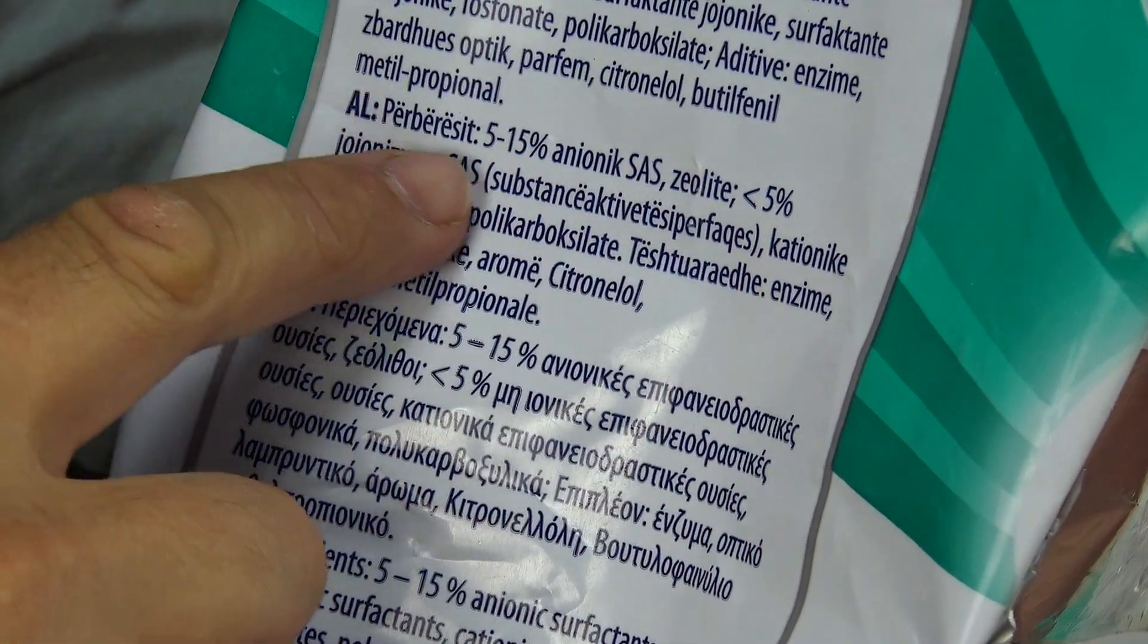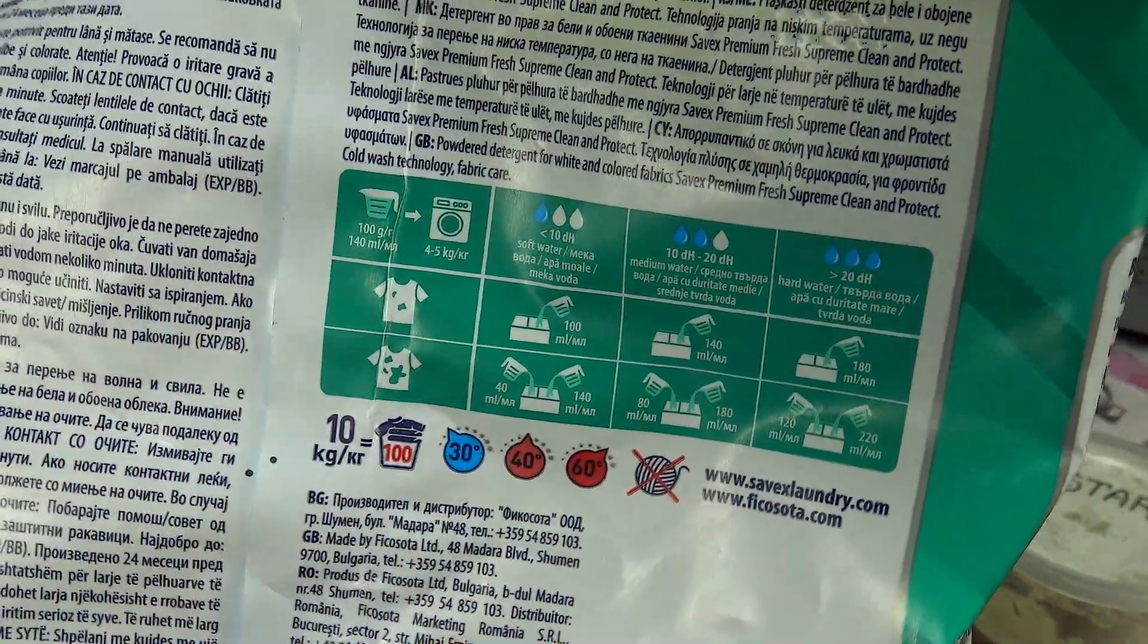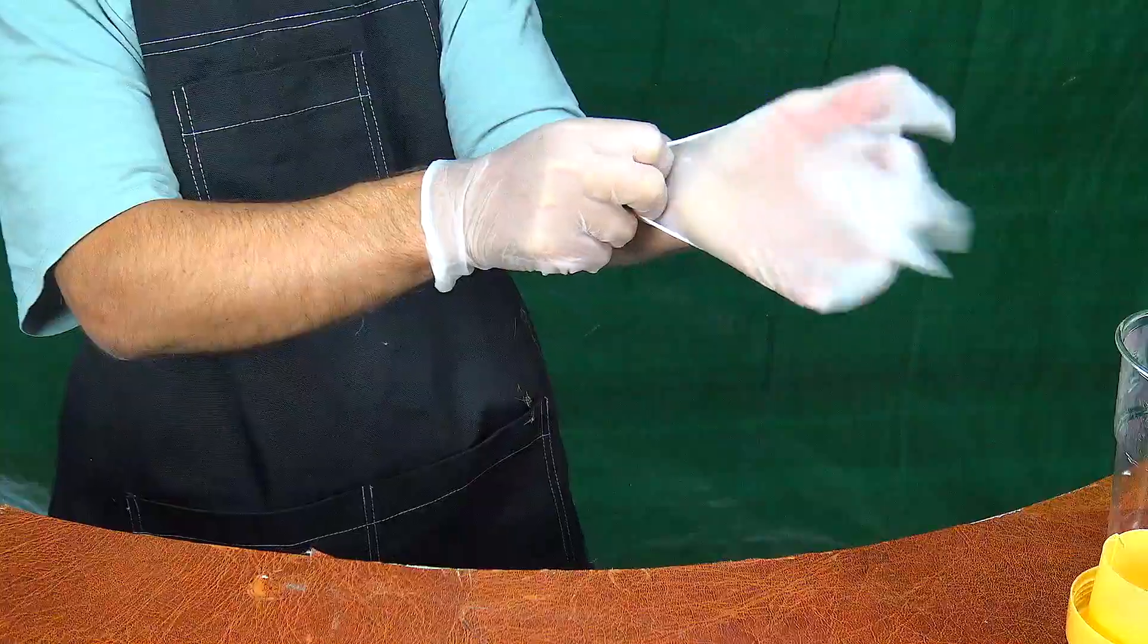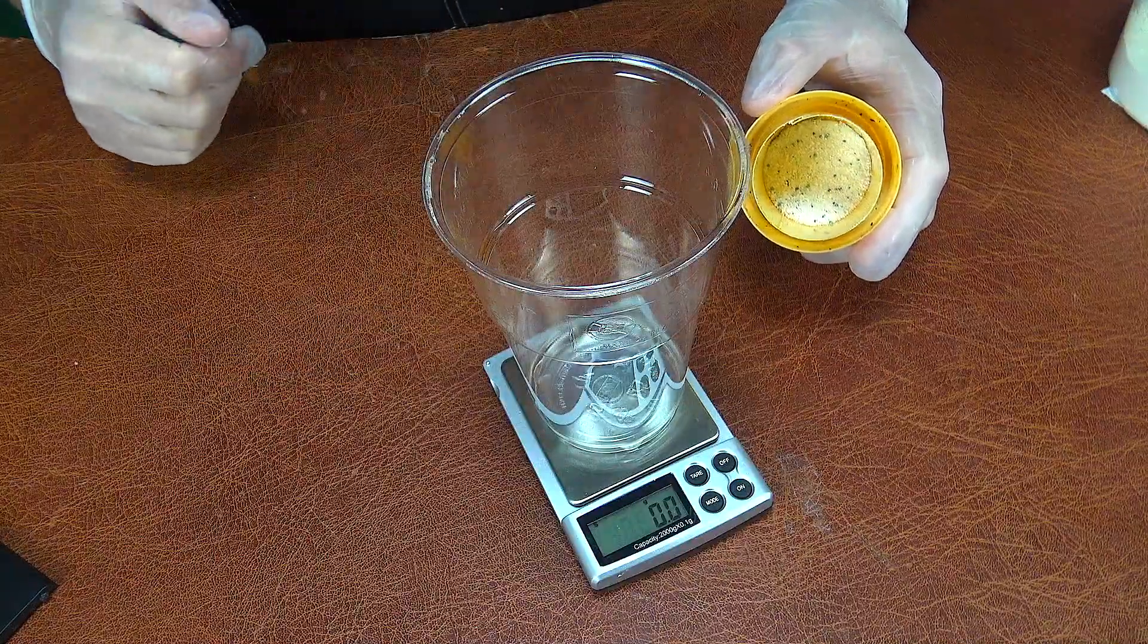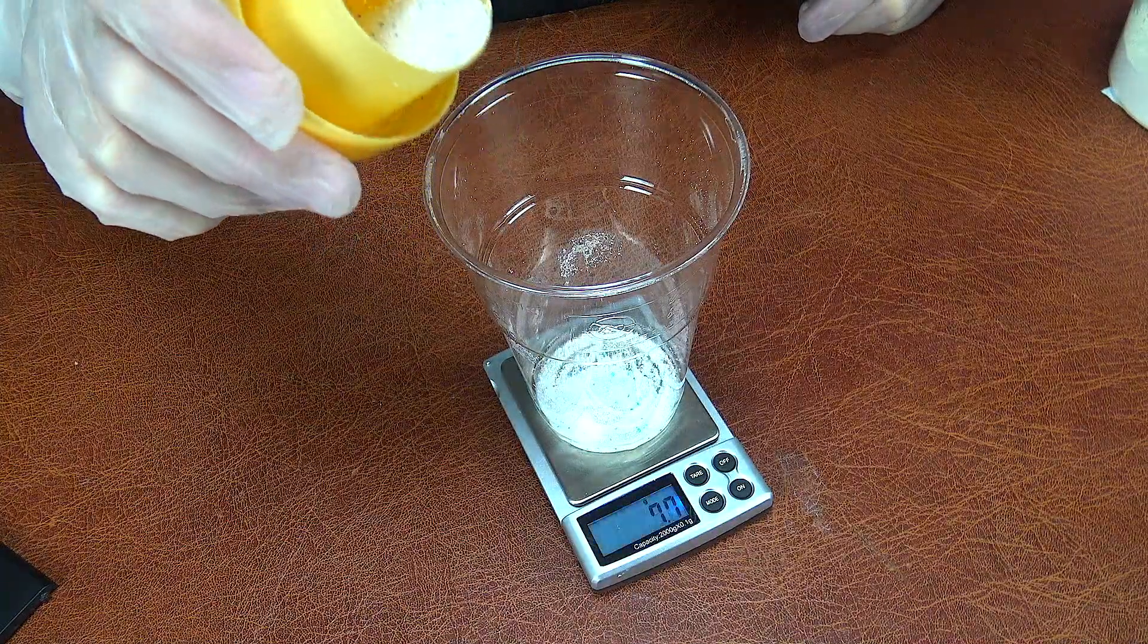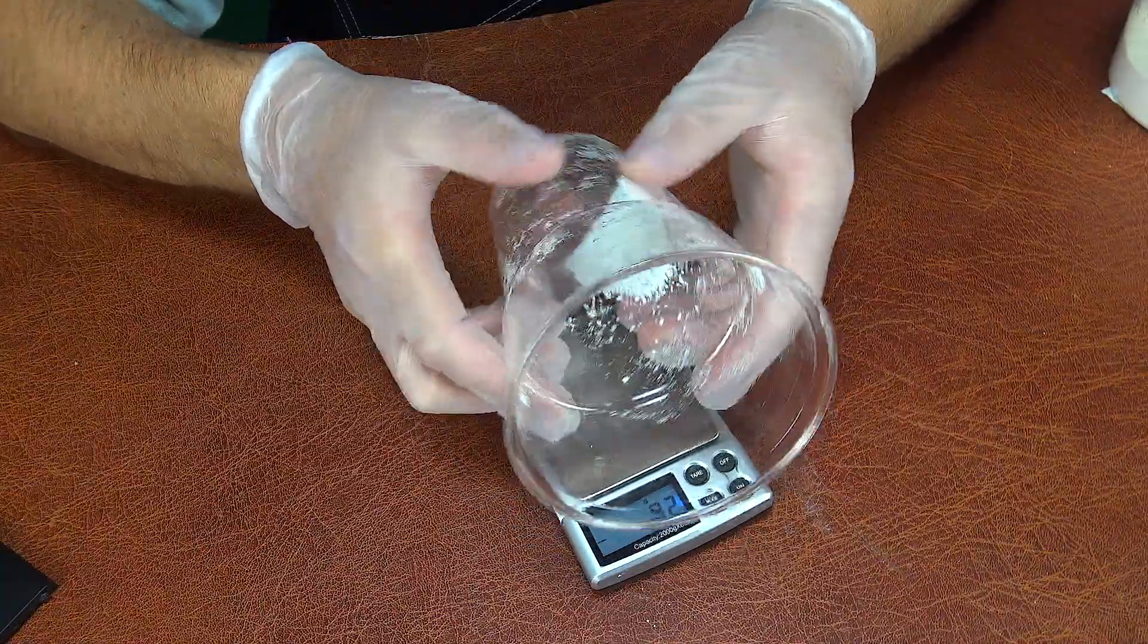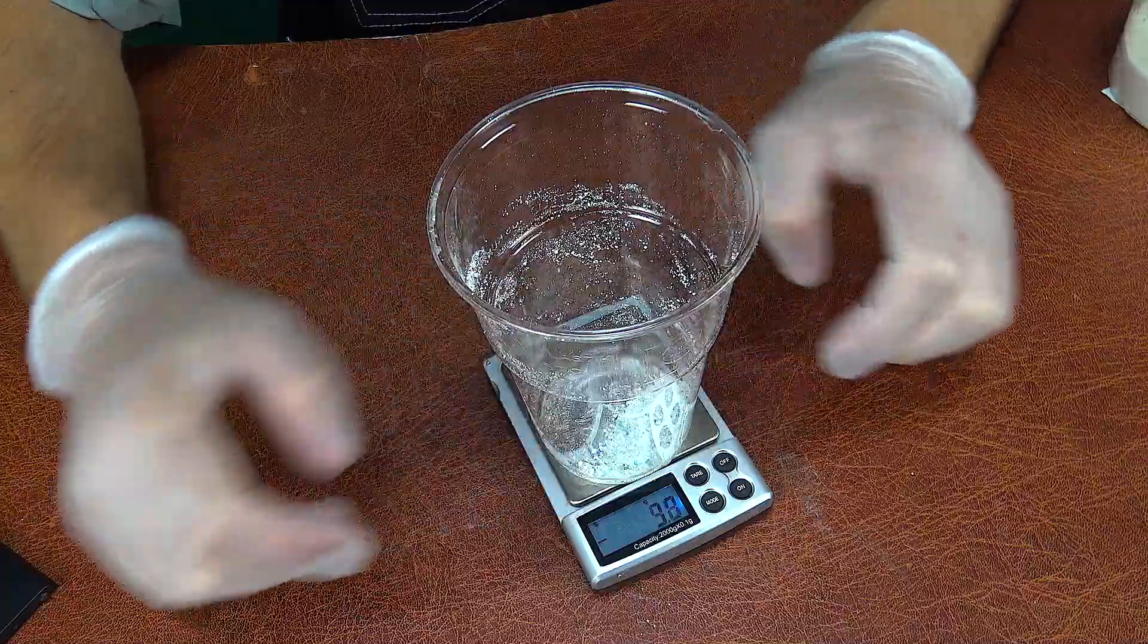Here's the whitening powder I'll be using to make the phosphorescent mixture. The packaging lists quite a lineup of ingredients: 5-15% anionic surfactants and zeolites, less than 5% non-ionic and cationic surfactants, phosphonates, polycarboxylates, as well as enzymes, optical brightener, fragrance, and additives like citronellol and butylphenol methylpropionol. Inside, along with the white powder, there are also distinct blue granules.